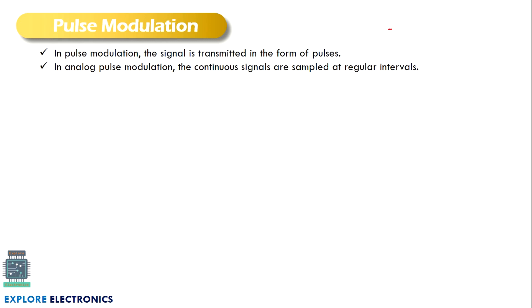A pulse is a signal which has a low value for a certain period of time, then becomes high, then becomes low, then becomes high again — cycling between zero and one. This cycle continues, so a pulse is a signal with a combination of zero and one for a certain amount of time. This period will not change throughout the pulse; it will have a constant duration.